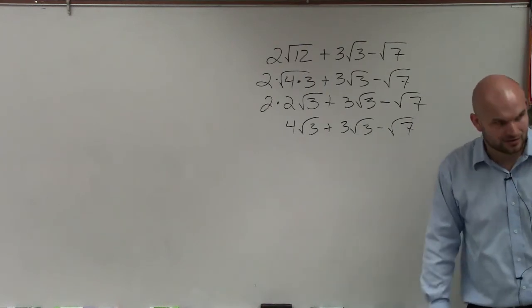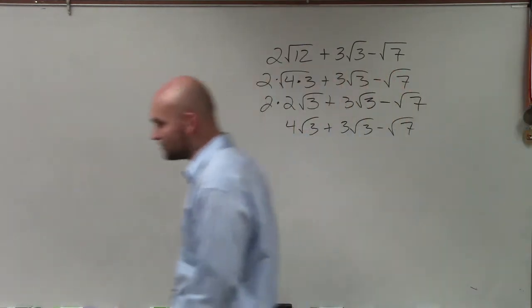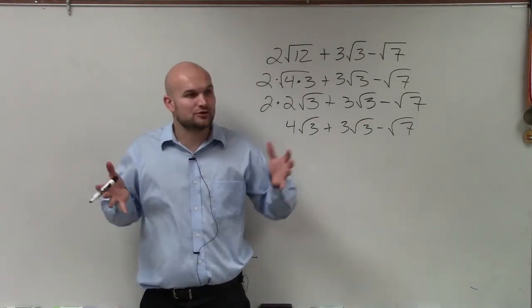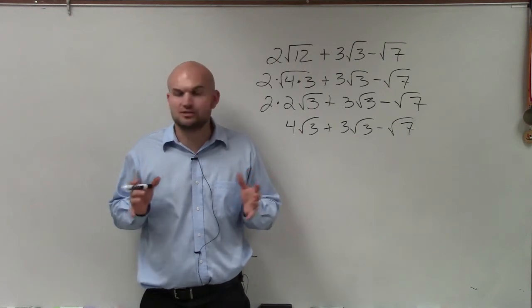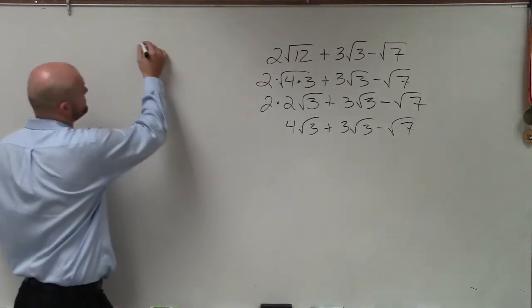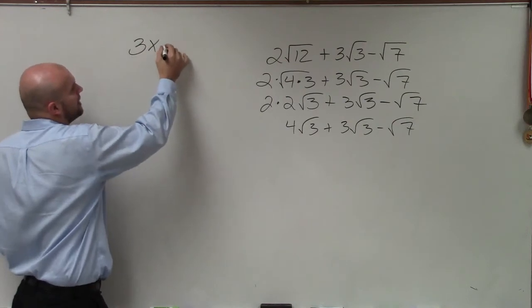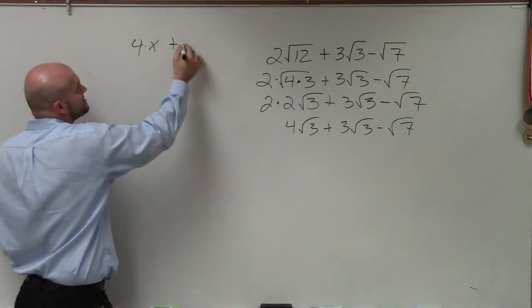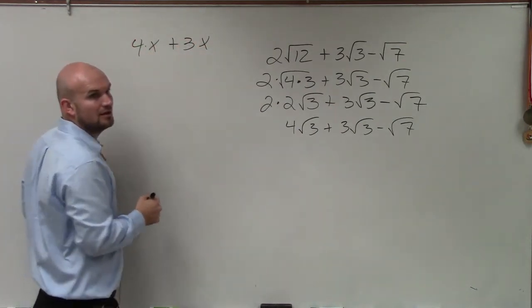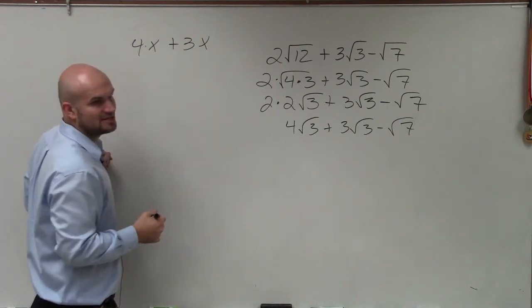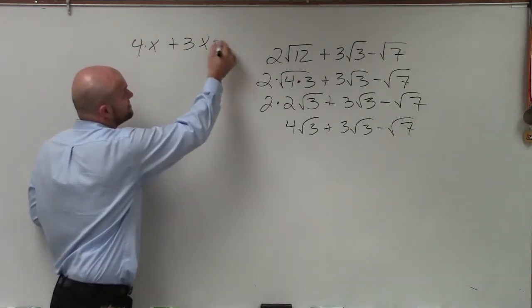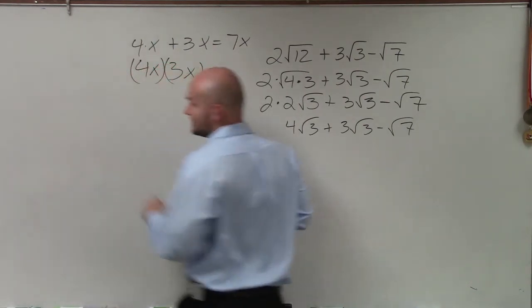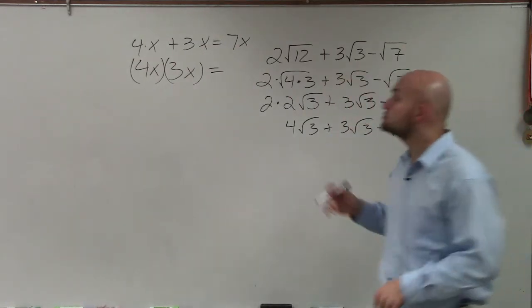So how do we add the radicals? And I want you guys to be very, very careful when you're doing this, because what is true for addition and subtraction is not true the same for multiplication and division. For instance, 4x plus 3x is equal to 7x. However, 4x times 3x is equal to 12x squared.